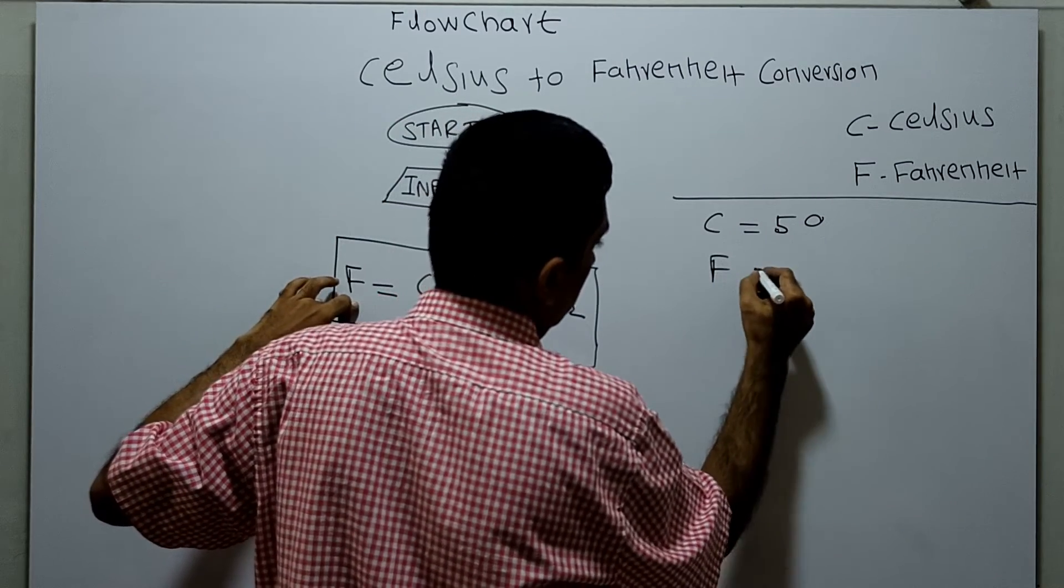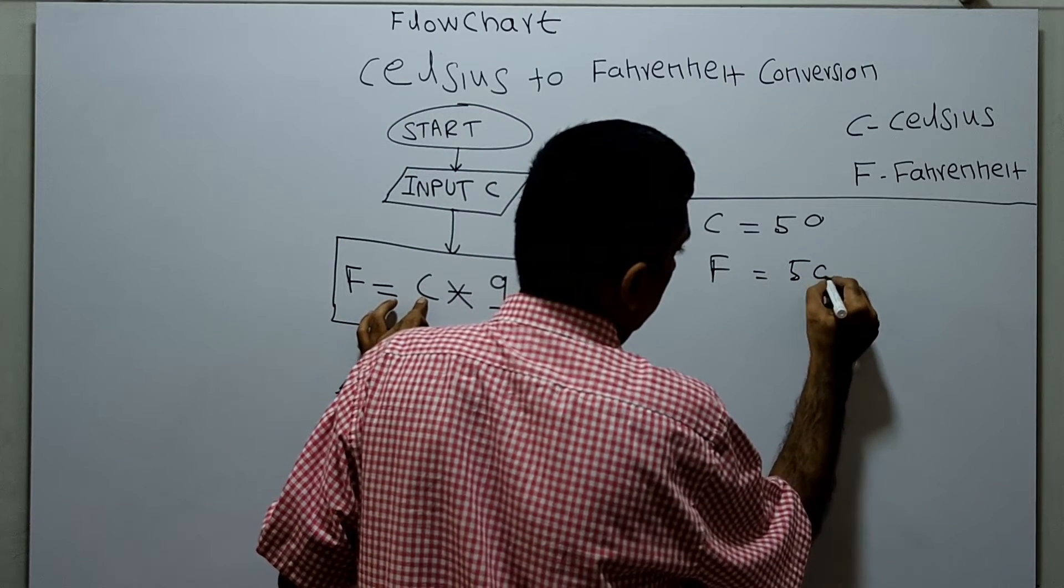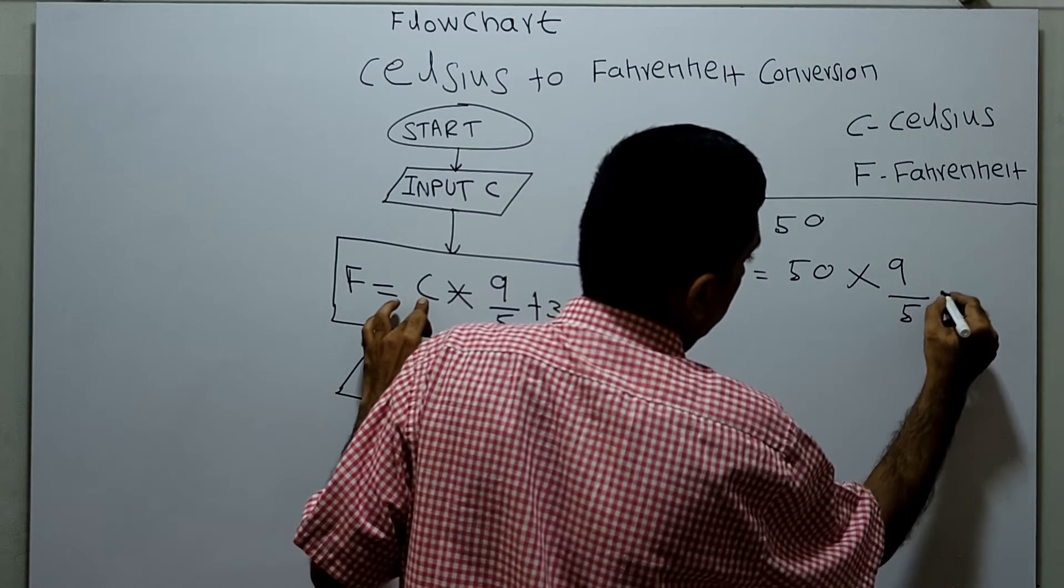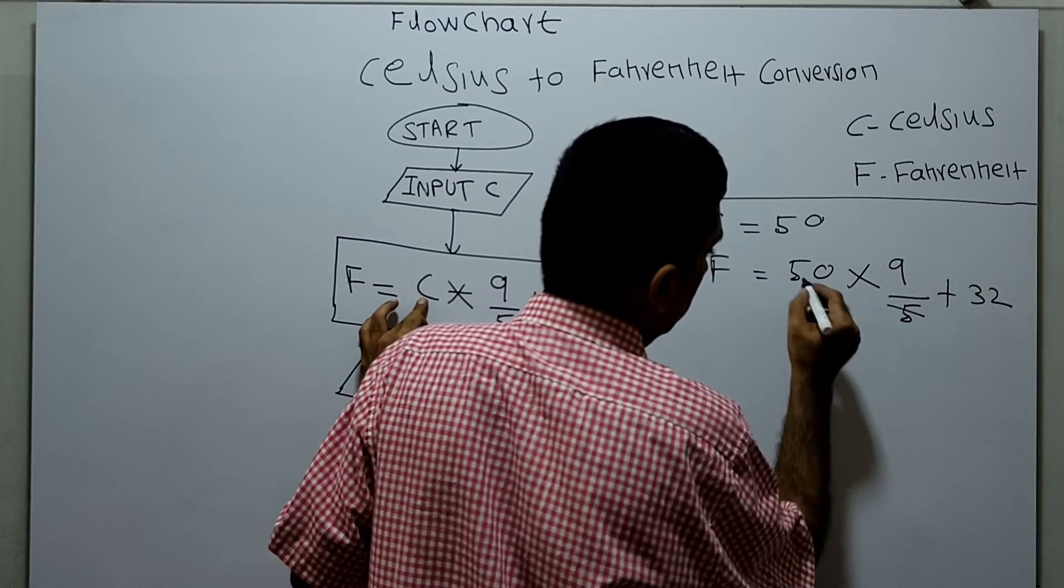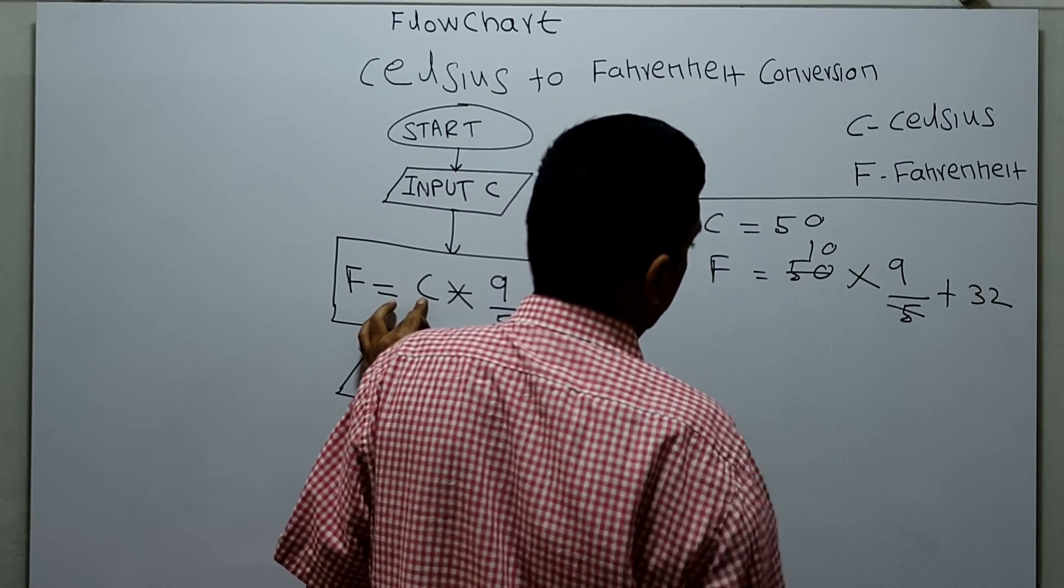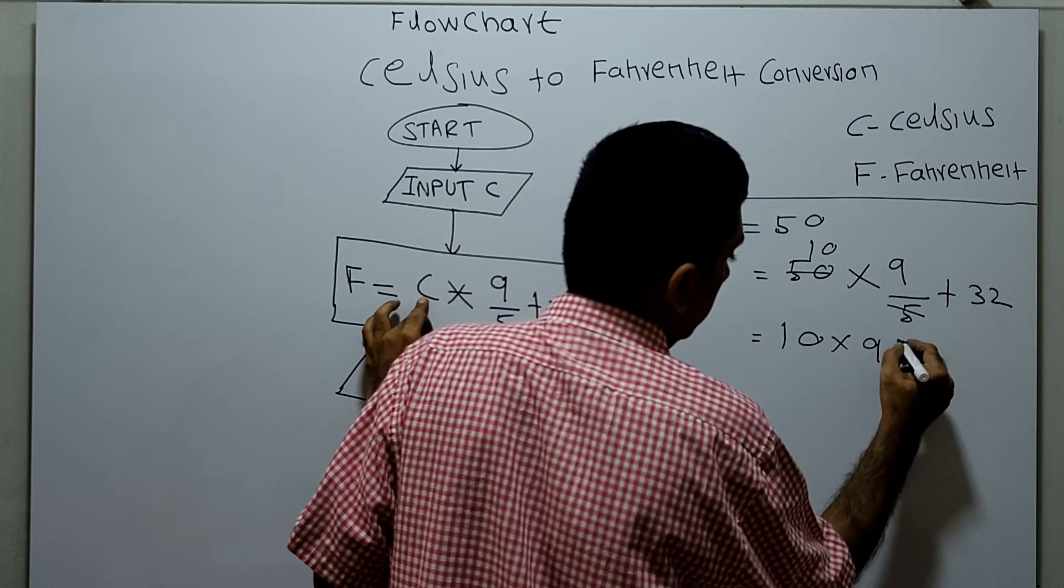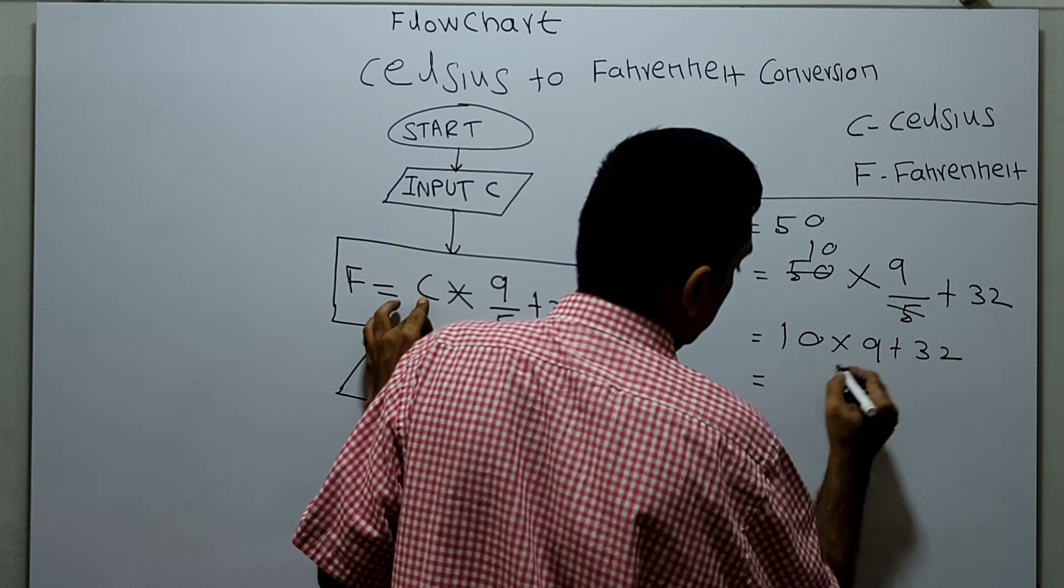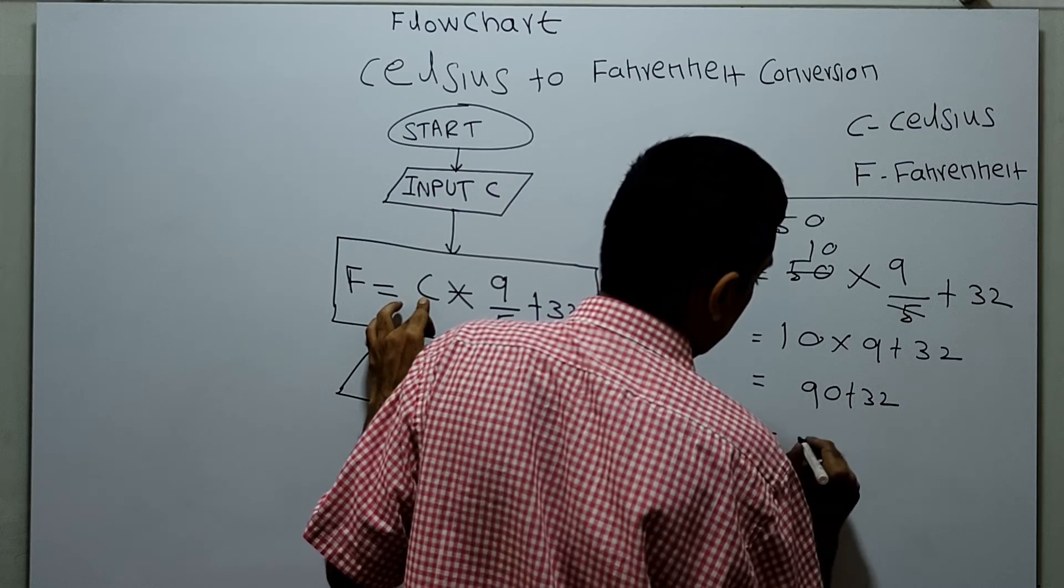Forming it: F equals C, Celsius value 50, into 9 by 5 plus 32. Here 5 goes 10 times. So what I have to do is 10. Here 10 into 9 plus 32. 10 multiplied by 9 is 90 plus 32, which is equal to 122.